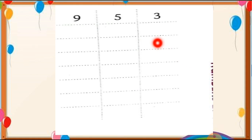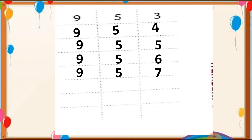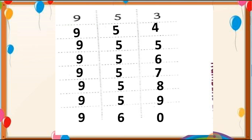Here is one more textbook exercise, students. Let us complete it: 953, 954, 955, 956, 957, 958, 959, and at the last, 960. This way we have to complete this table and hope this topic is clear to you all.